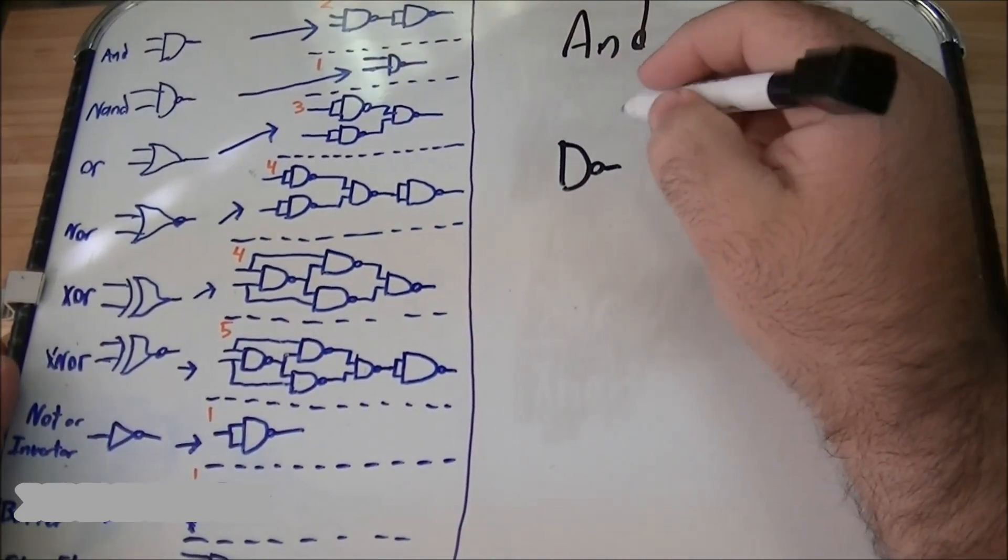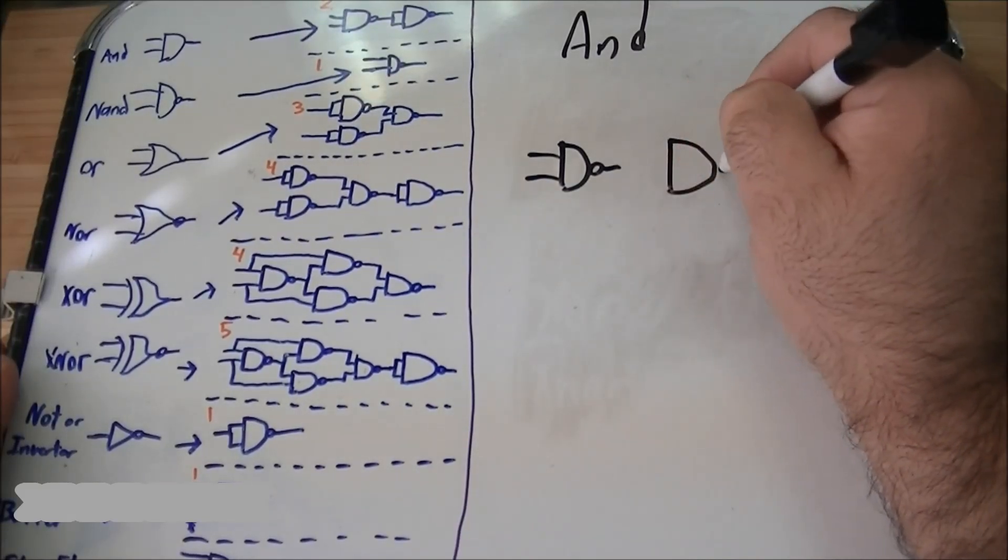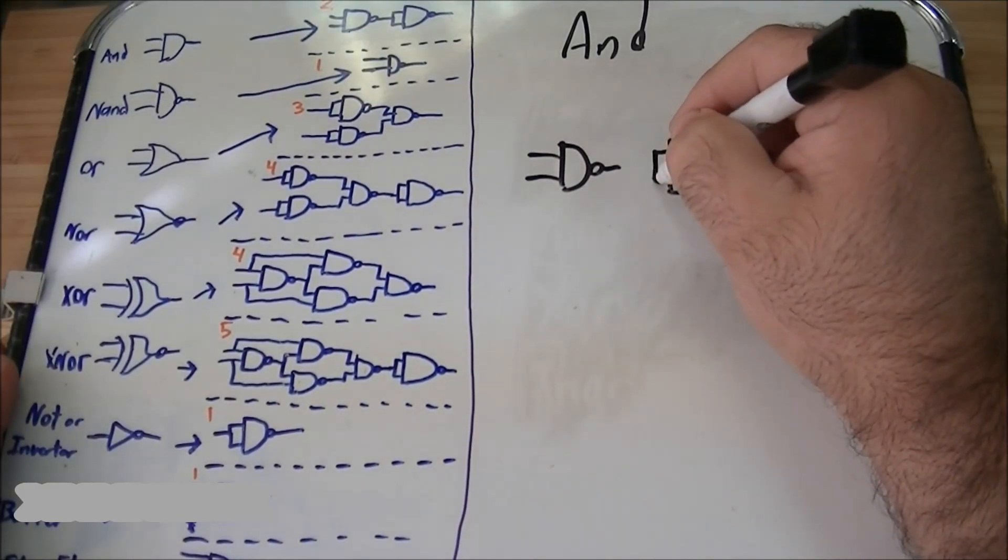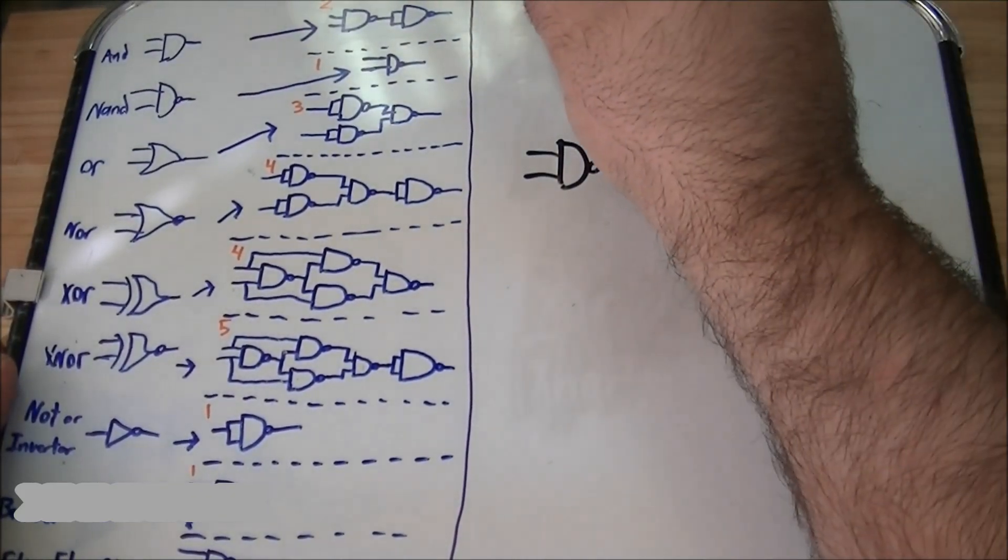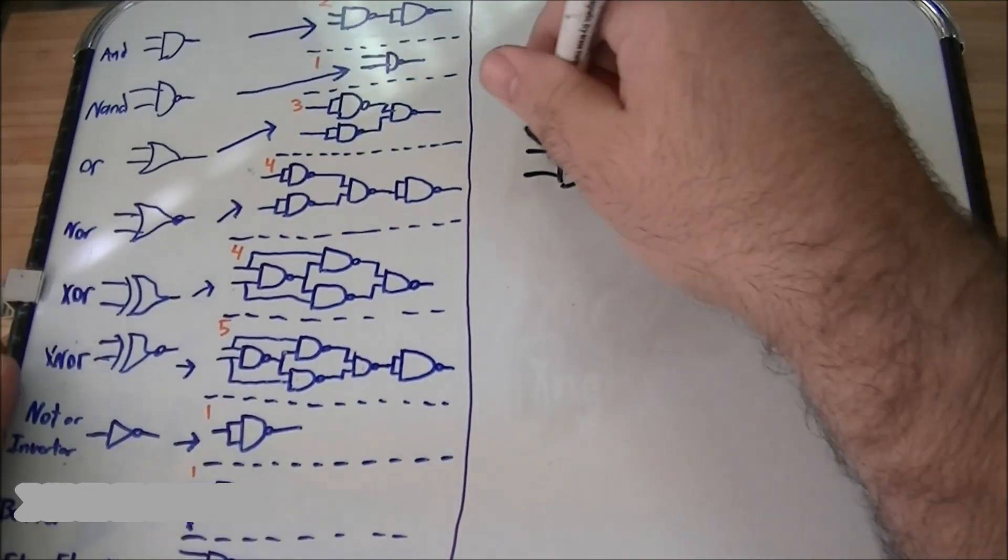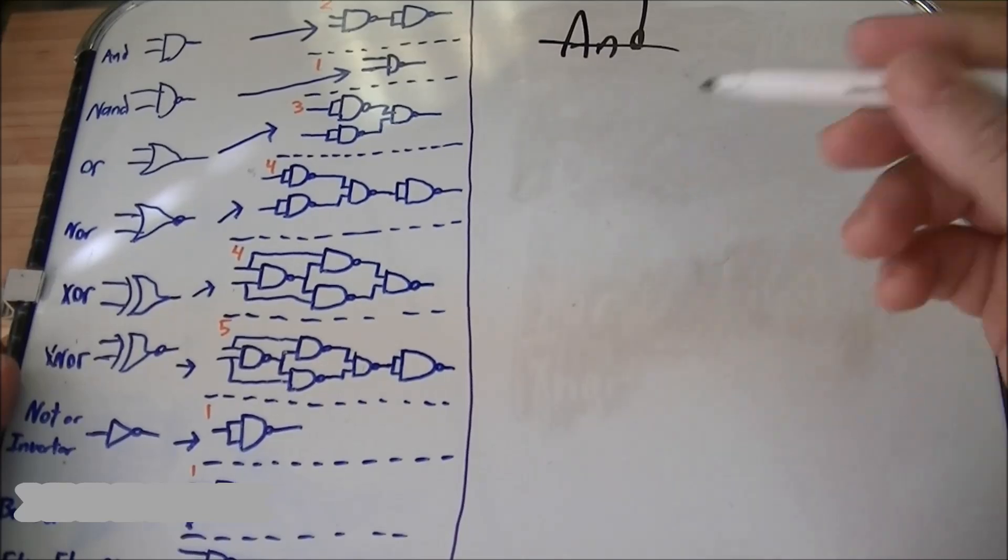Here's your NAND gate. All you have to do is use two of them, put these outputs together like this, and there is your AND gate done. Of course, we're not going to do the NAND gate because all you have to do is use the chip.